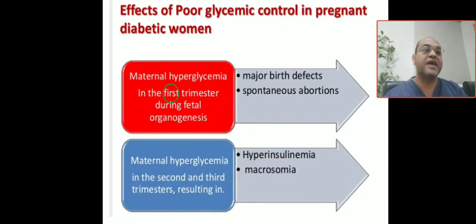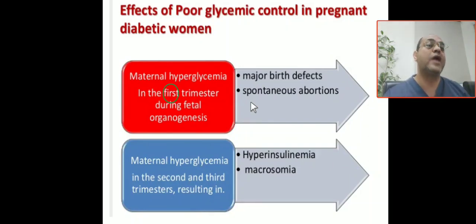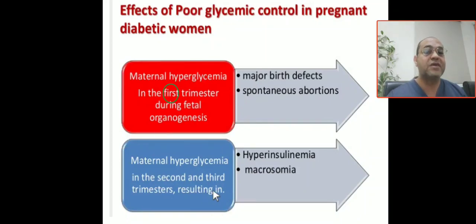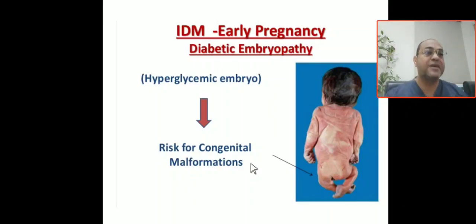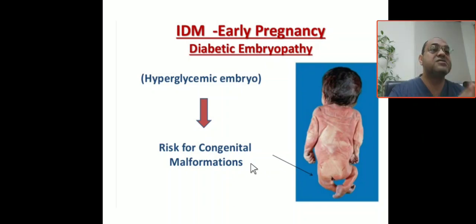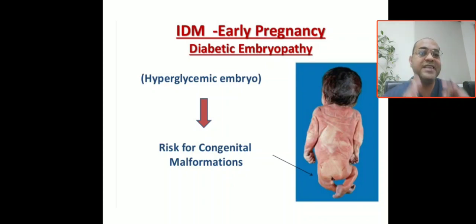If maternal hyperglycemia occurs during the first trimester, it affects fetal organogenesis and major birth defects occur — even spontaneous abortion may happen. If maternal hyperglycemia is uncontrolled in the second trimester, it leads to hyperinsulinemia and macrosomia. So early pregnancy leads to diabetic embryopathy — hyperglycemia in the embryo leads to risk of congenital malformations. All major anomalies and organogenesis defects happen in the first trimester. The macrosomia is due to hyperinsulinemia. Our advice is to control diabetes preconceptionally, not just in the first trimester.